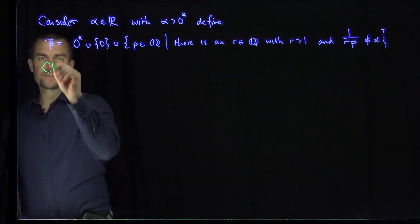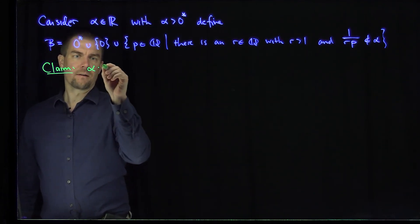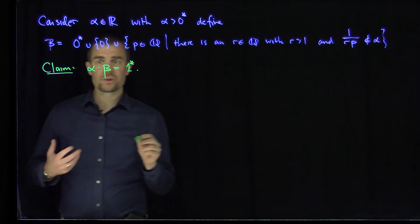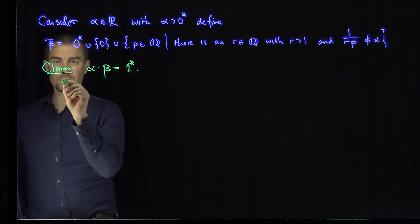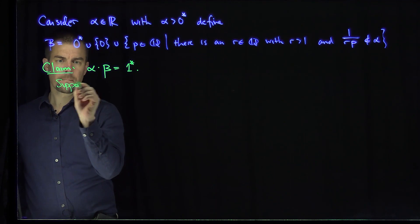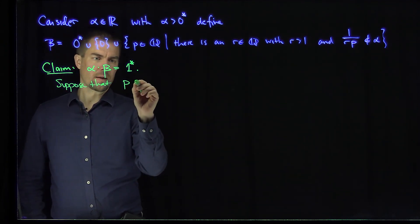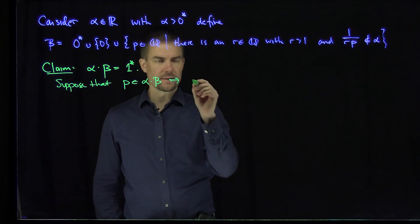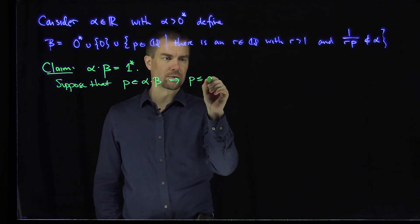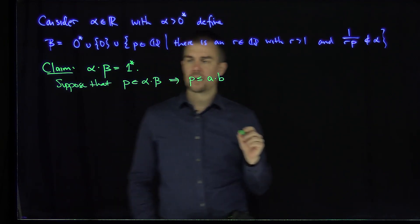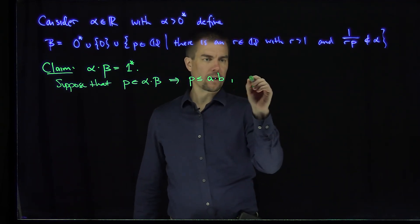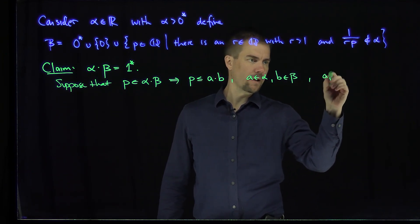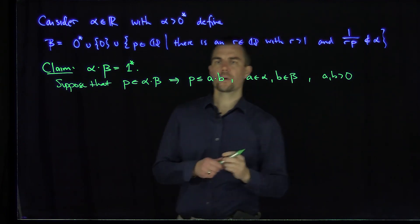Our claim is that alpha · beta equals 1*. There are two inclusions to prove here. Let's prove the first: suppose p is in alpha · beta, which implies p ≤ a·b where a is in alpha and b is in beta, both greater than zero.